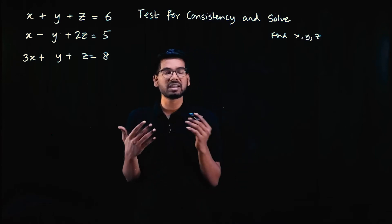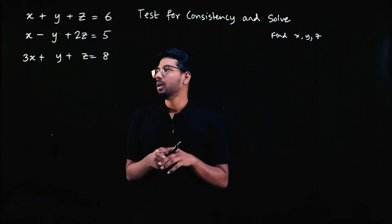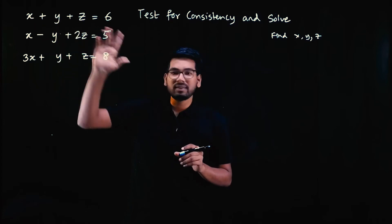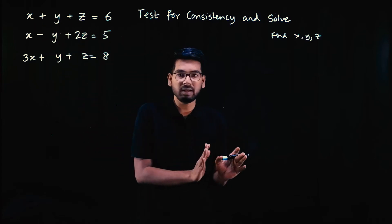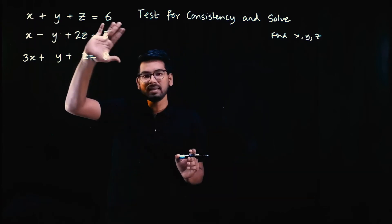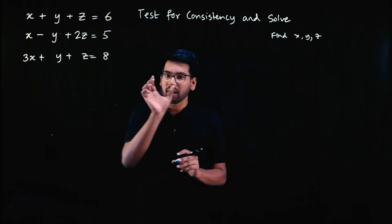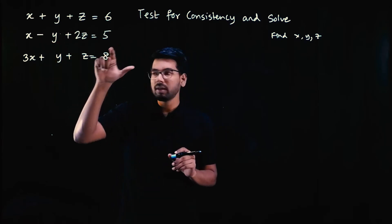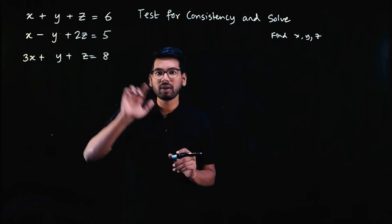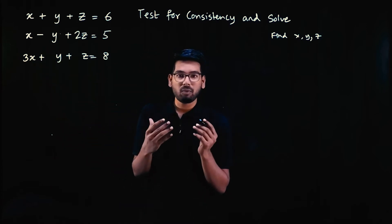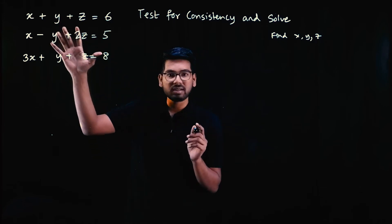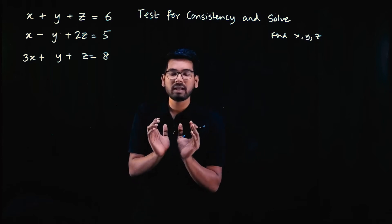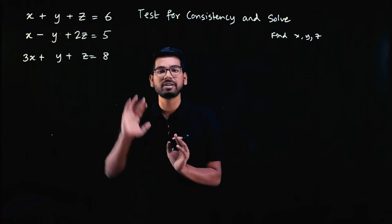Suppose this equation is given. Equation X+Y+Z equals 6. If I substitute X=1, Y=2, Z=3, this equation is satisfied — 1 plus 2 plus 3 is 6. But will the same X, Y, Z values give me 5 in another equation? Will it give me 8? That is what consistency means. A system of equations is consistent if one set of X, Y, Z values satisfies all three equations.